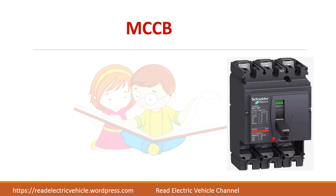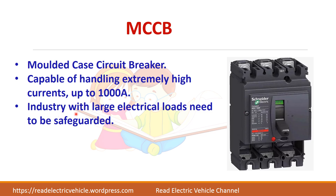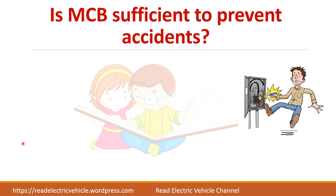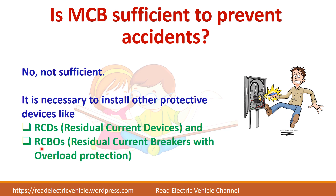There is also the molded case circuit breaker, or MCCB, which has the same function as the MCB with a key difference. MCBs are used for low power applications in the range of 1A to 125A, whereas MCCBs are used for high power applications where the current is very high — normally in industries with very large electrical loads. However, MCB alone is not sufficient to prevent accidents. To protect a person from electric shock, we also need devices like residual current devices and residual current breakers.